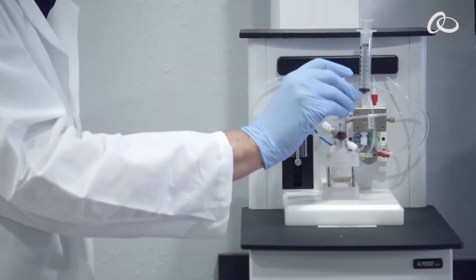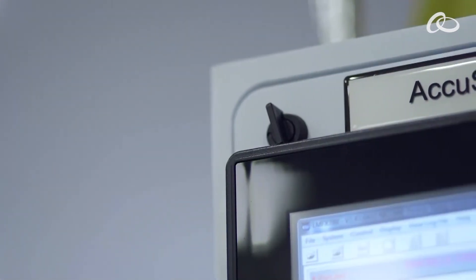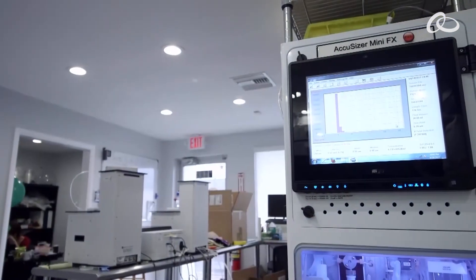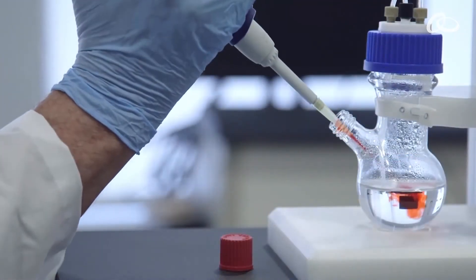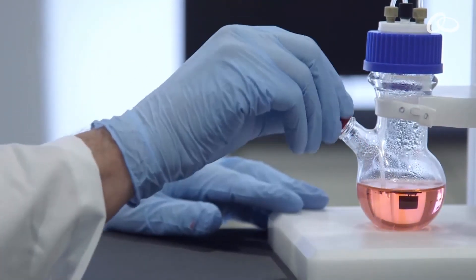The AccuSizer is used to count contamination particles in liquids ranging from parenteral drugs to water and hydraulic fluids. It's the industry standard for detecting large particle counts in CMP slurries and is used as a particle size analyzer in the pharmaceutical, ink, and emulsion industries.